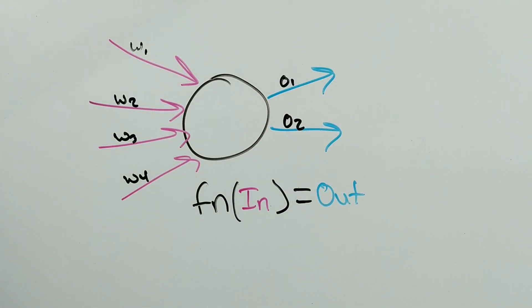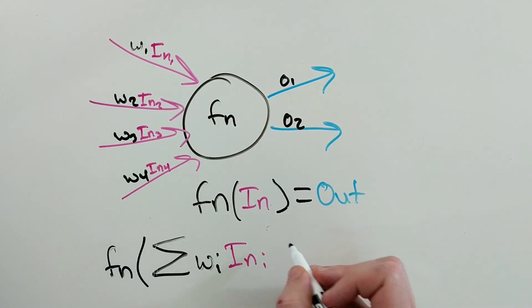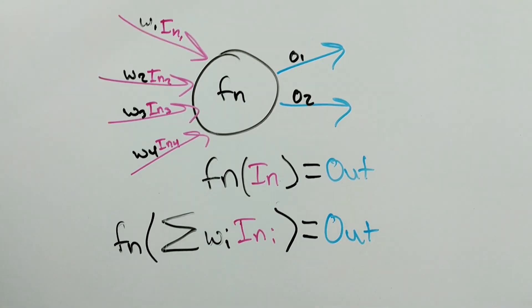When dealing with neural networks, we call these coefficients weights. Additionally, there is an activation function that takes in the sum of these weighted inputs and then modifies it in some way.